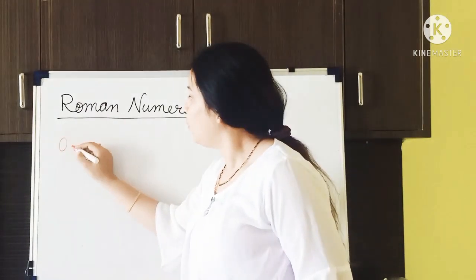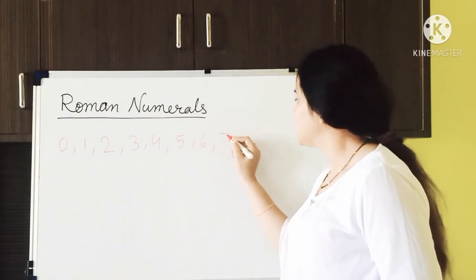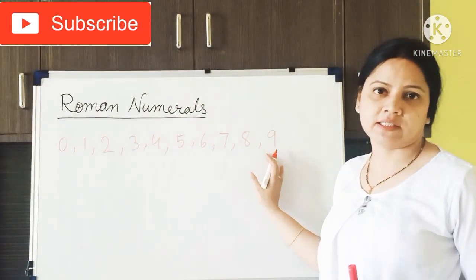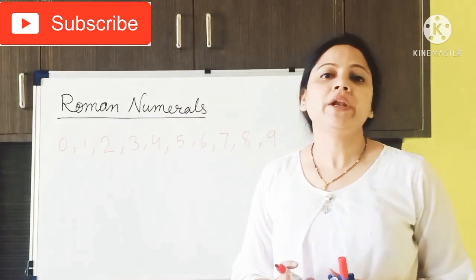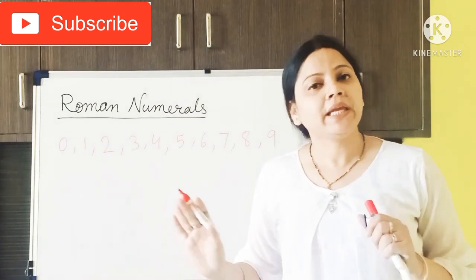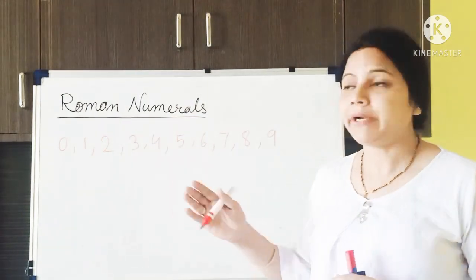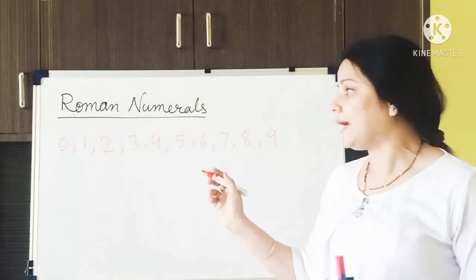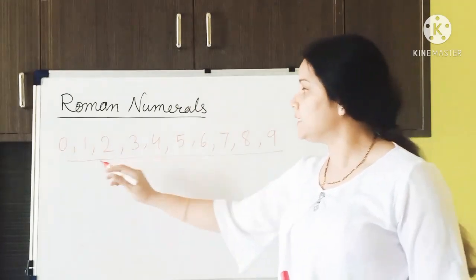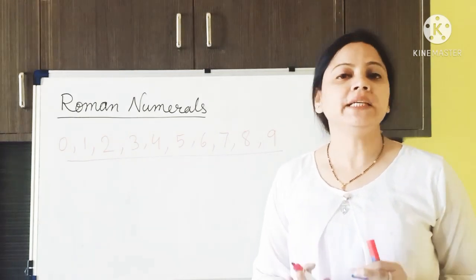Till now we have studied about the Indian Arabic number, that is also called as international numbers — from 0, 1, 2, 3, 4, 5, 6, 7, 8 and 9. All the numbers made by using these 10 digits are called international numbers or Indian Arabic numbers. They are called Indian Arabic because these digits were developed by ancient Indians and spread to other countries by the Arab people.